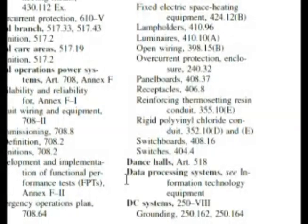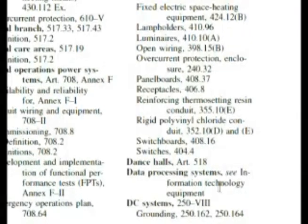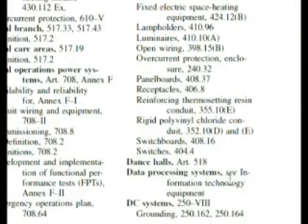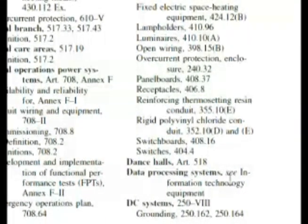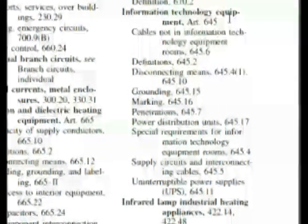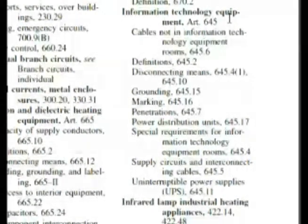Here we are at the index of the code book — data processing systems — and it's telling us to see information technology equipment. So let's look under information technology equipment. We're at the index: information technology equipment, and it says Article 645. So again, if you knew that, you would know that data processing would be listed under that.